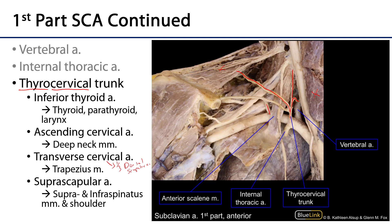Finally, from the thyrocervical trunk going across and then back is the suprascapular artery. It heads over the superior border of the scapula by the suprascapular notch and supplies two rotator cuff muscles with blood: the supraspinatus and infraspinatus, located on the posterior aspect of the scapula — one above the spine and one below. There are also typical collateral connections between the suprascapular artery and other scapular arteries.